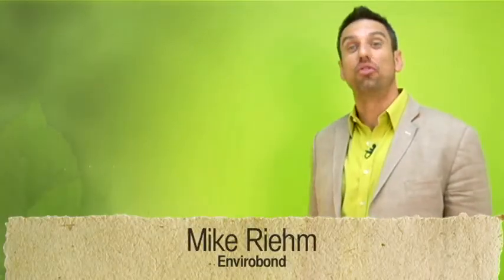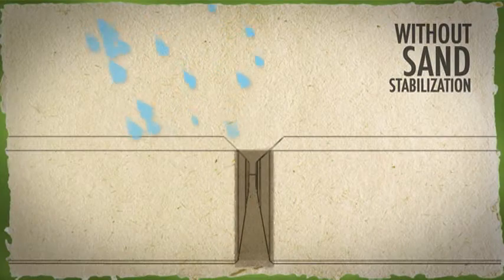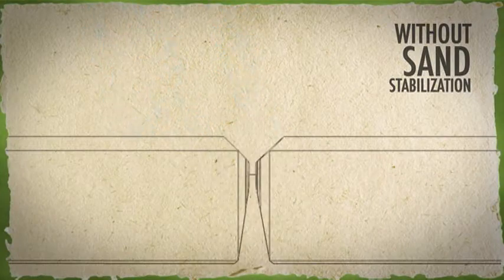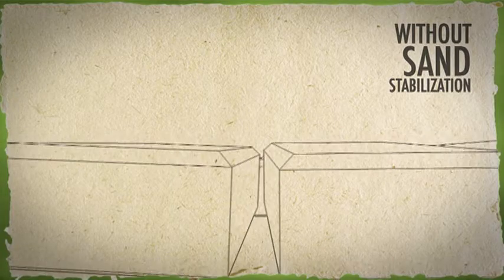Did you know that rainfall erosion is the number one cause of joint sand loss in a segmental system? Systems without sand stabilization are prone to easily washing out with heavy rains. When the sand washes out, the system becomes immediately compromised.